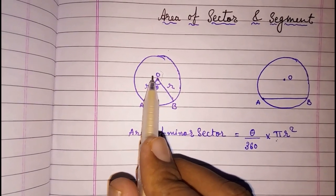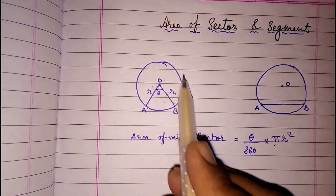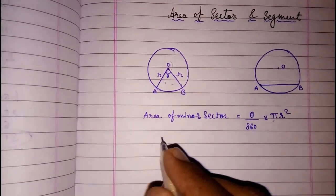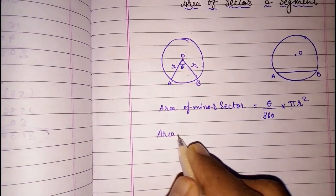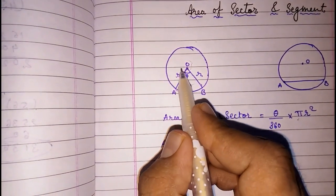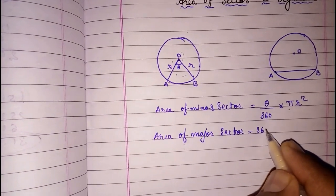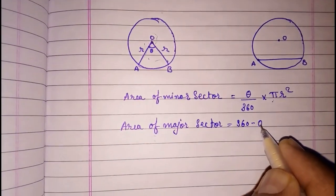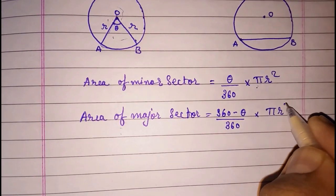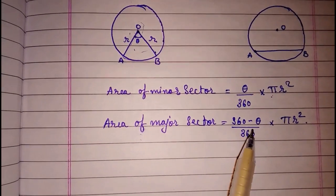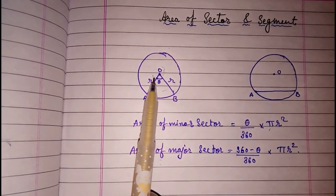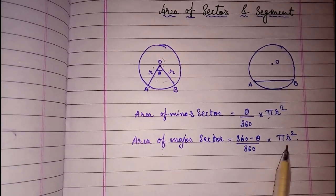If we want to find the area of the major sector, we can find it directly. We can find the area of the circle, then subtract the area of the minor sector. Or we can use the same formula with the major angle: 360 minus theta upon 360 into pi r square. For example, if theta is 60 degrees, then 360 minus 60 is 300, so we put 300 upon 360 into pi r square.